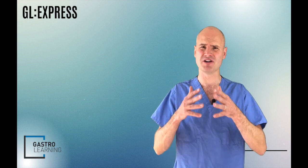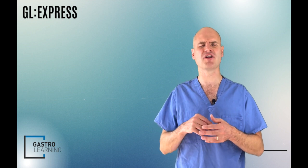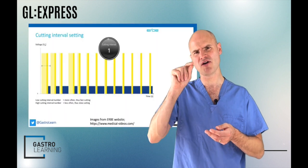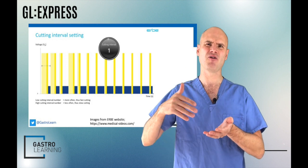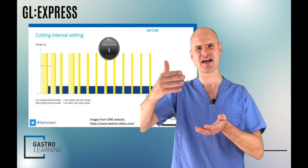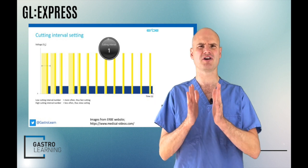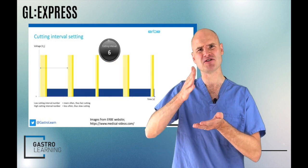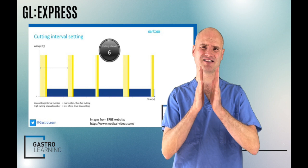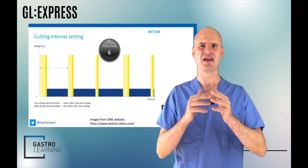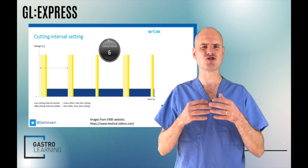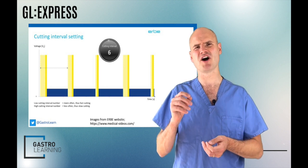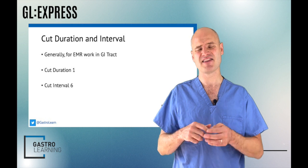Moving on to the cutting interval, this is the time between those high voltage cutting times where the tissues can cool down and we allow that effect, that coagulation phase, to happen. The shorter the cutting interval, the less time there is between the cuts and therefore the less time there is for that coagulation phase to happen. Generally speaking, the machine selects this for us and the majority of the work we do, we want the cutting interval to be set at six. That's pretty much for all EMR work.